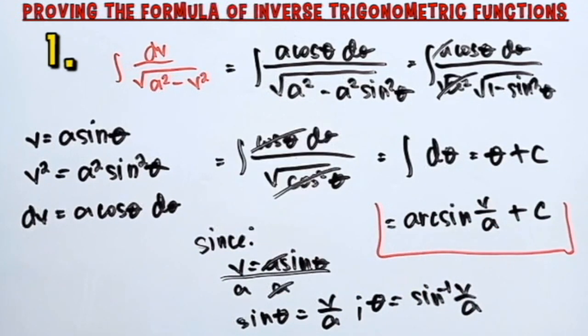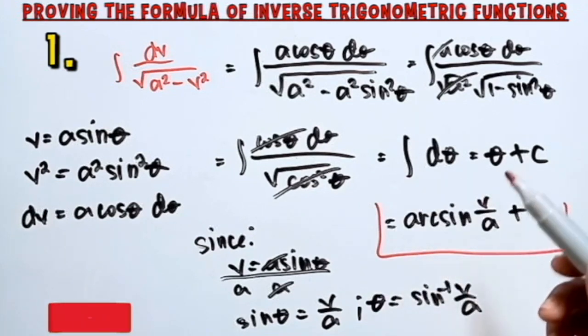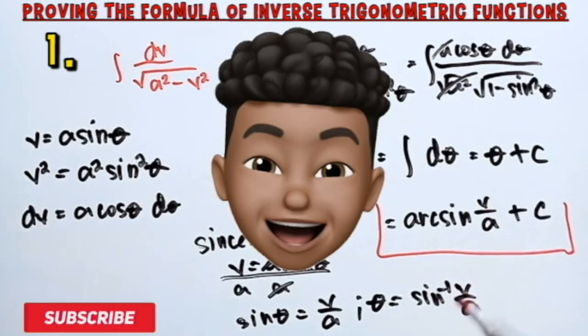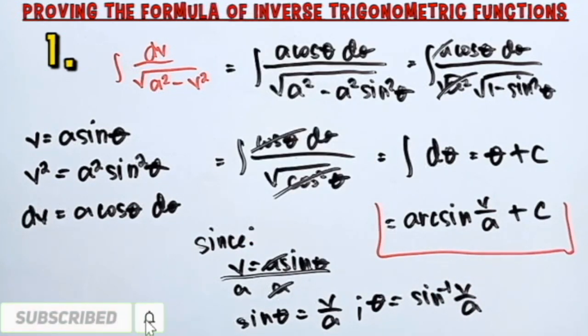Hence, we have proved that the integral of dv over the square root of a² minus v² is equal to arcsin(v/a) + c. Now let's proceed to the second formula.